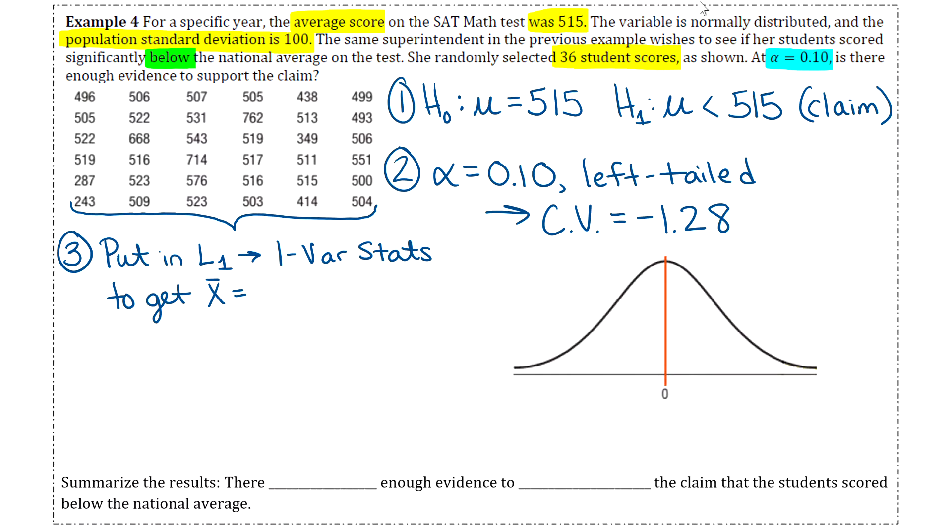So once you have all of those in a list, then you're going to go to one variable stats. And of course, tell it what list to use. So for me, I would do one variable stats L1. And then at the top of those stats, it's going to tell you what x̄ is. Now, one thing I want to caution you here is don't round too much when you jot down what your sample mean is. So in fact, I wouldn't do less than three decimal places. If you do less than that, you're risking throwing off your final answer. So I think this one came out to be like 509.0277777. So I went ahead and I rounded it to 509.028. If you want to do more than three, just to be careful, you can definitely do that.